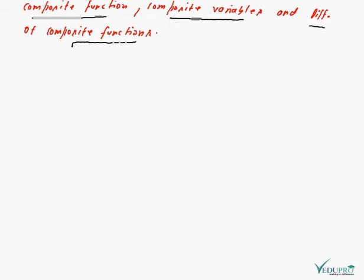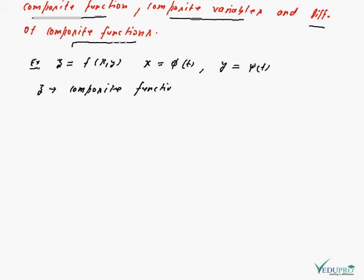For example, z is given as a function of x and y, where x is the function of t and y is the function of t. Then z is said to be a composite function of the composite variable t.